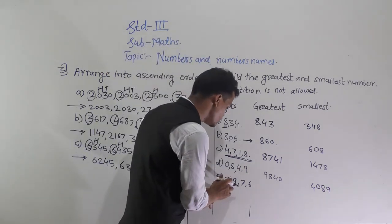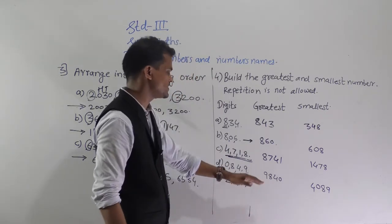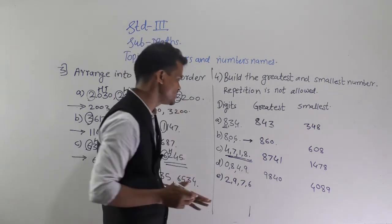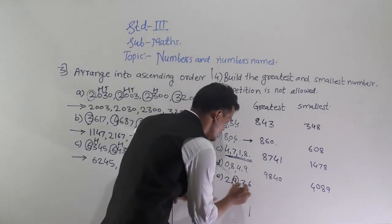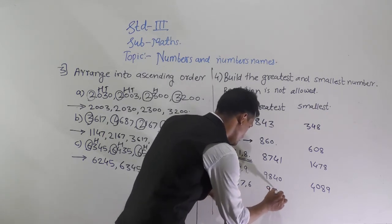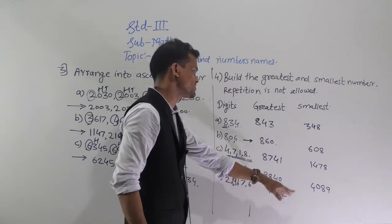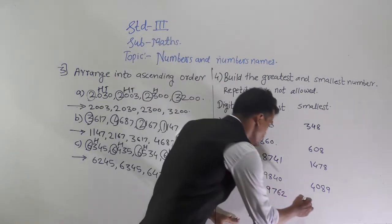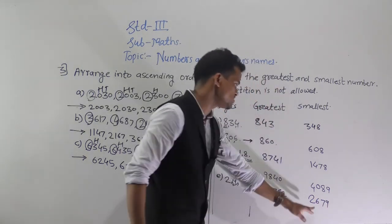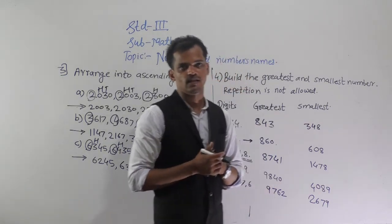Next, using digits 2, 9, 7, and 6: to form the greatest number, arrange in decreasing order — the greatest digit is 9, then 7, then 6, then 2. So 9762 is formed. For the smallest number, arrange small to big: 2, 6, 7, and 9. So 2679 is the smallest number formed.